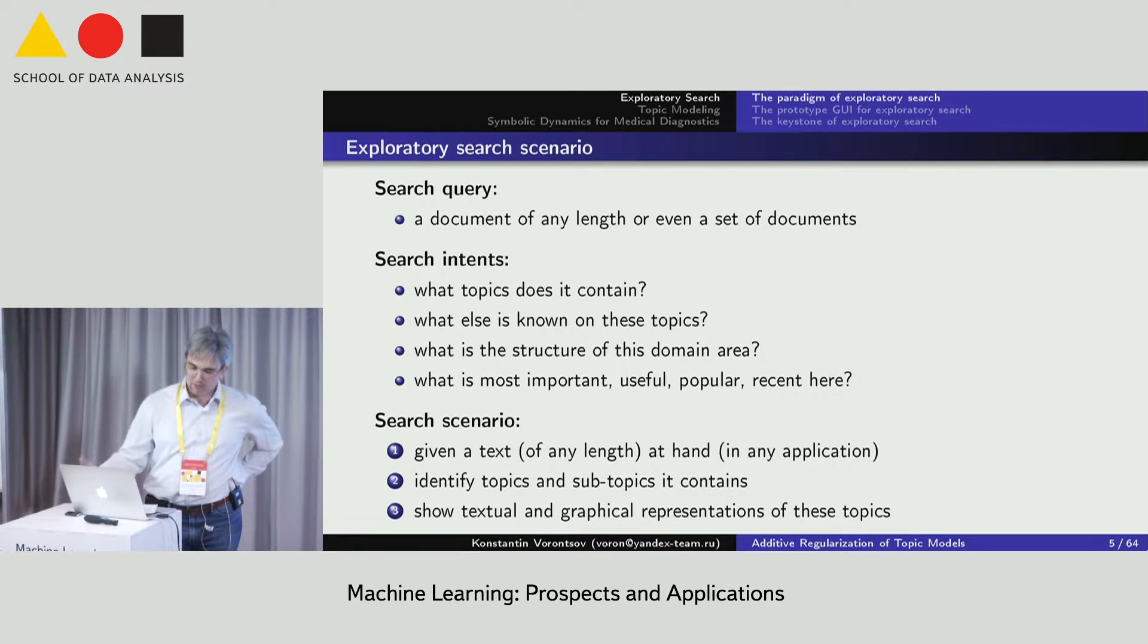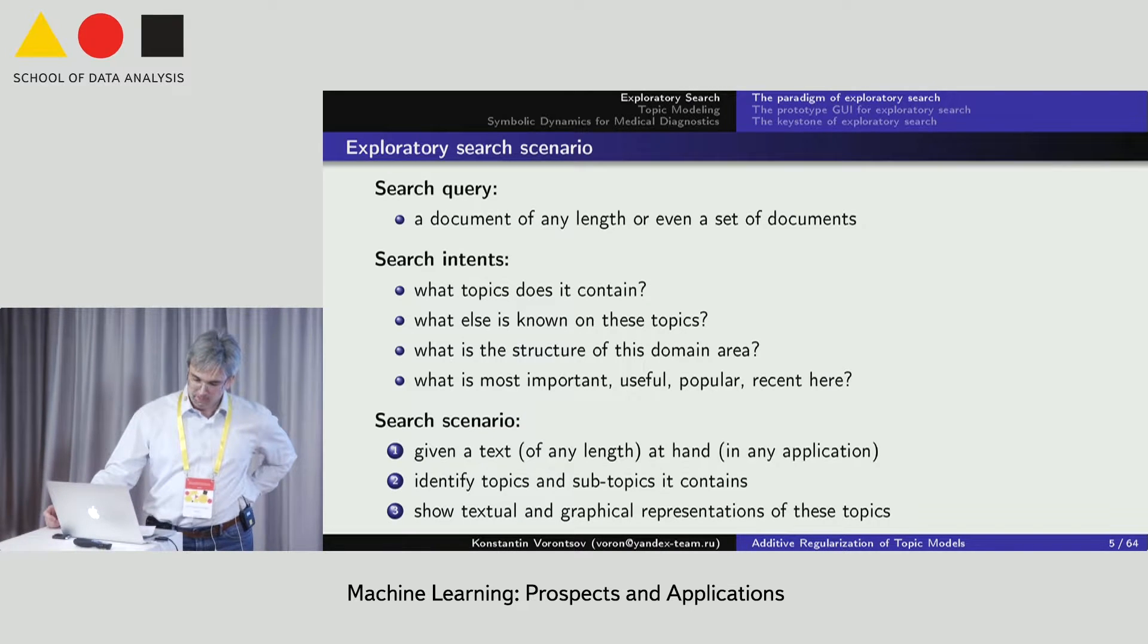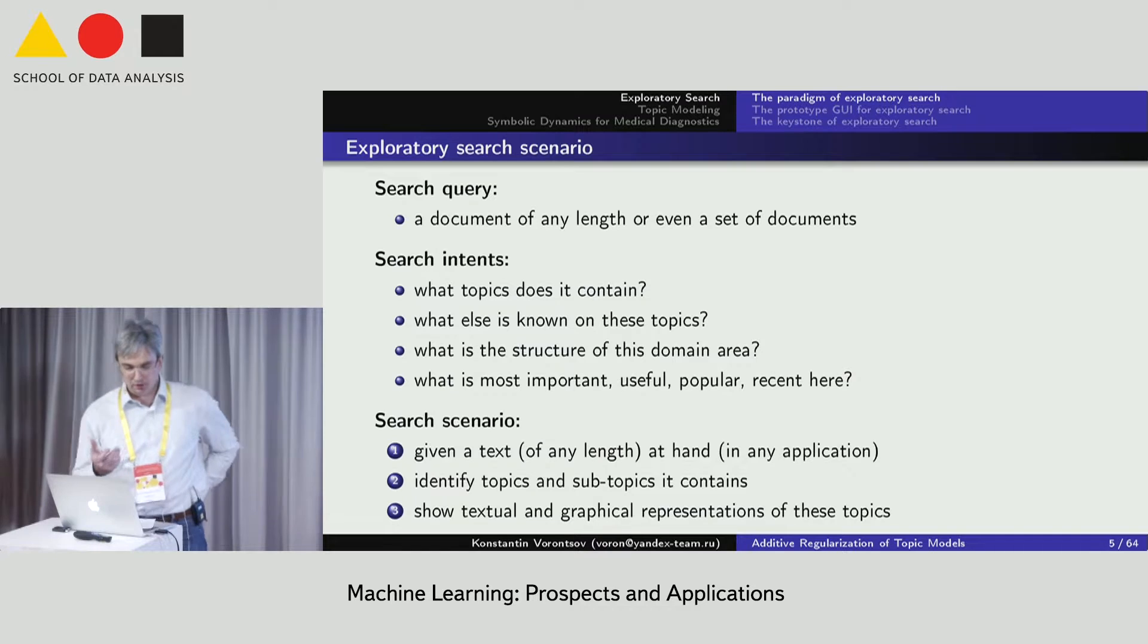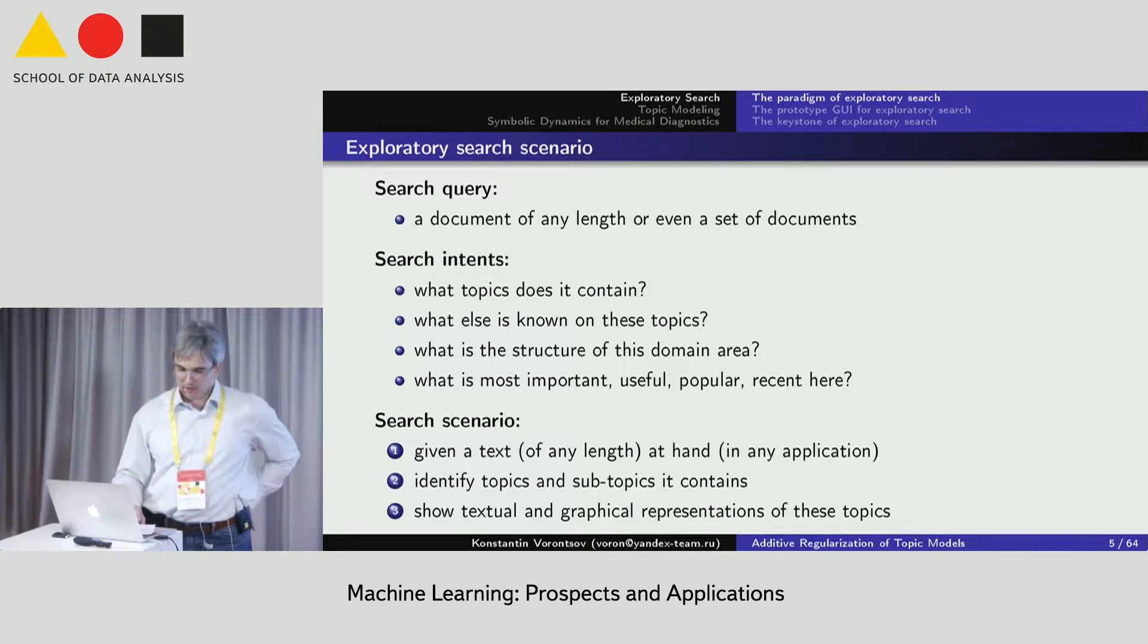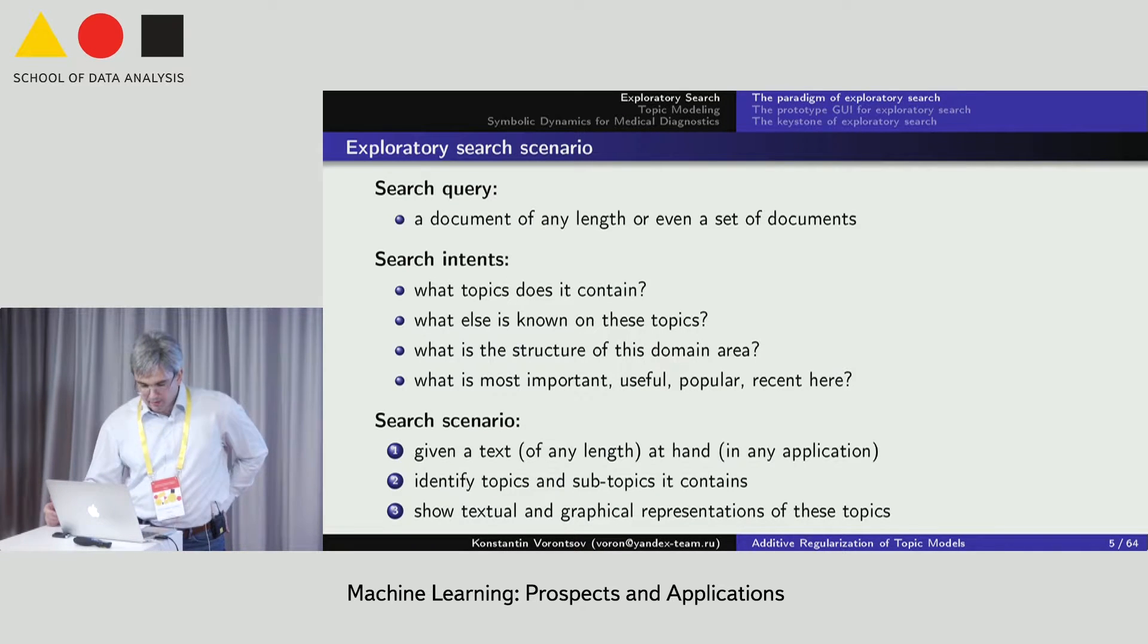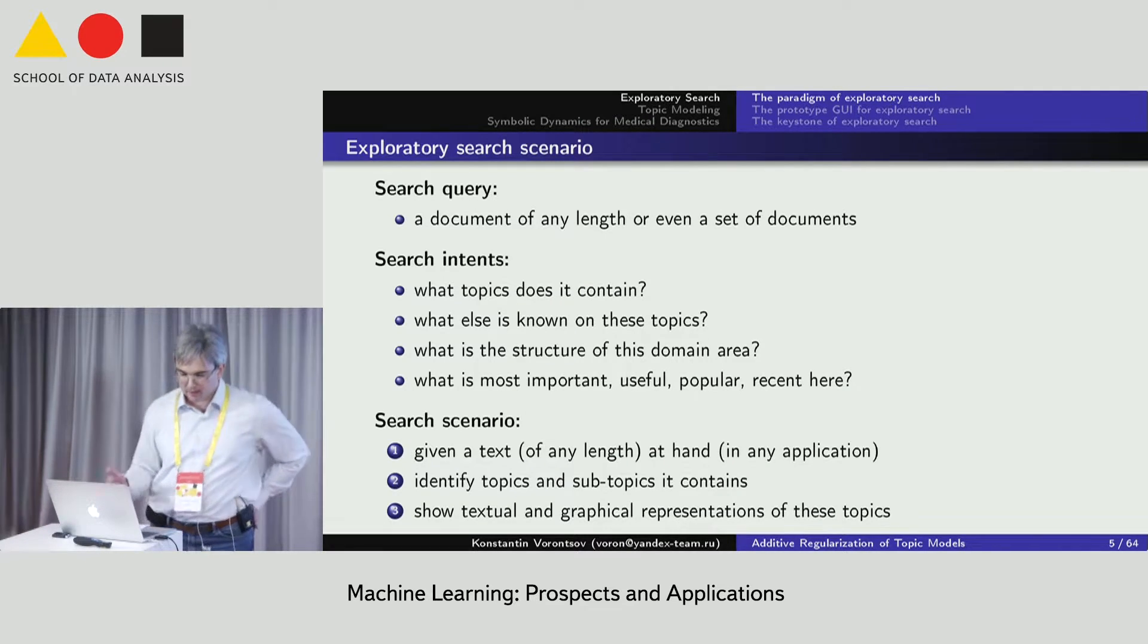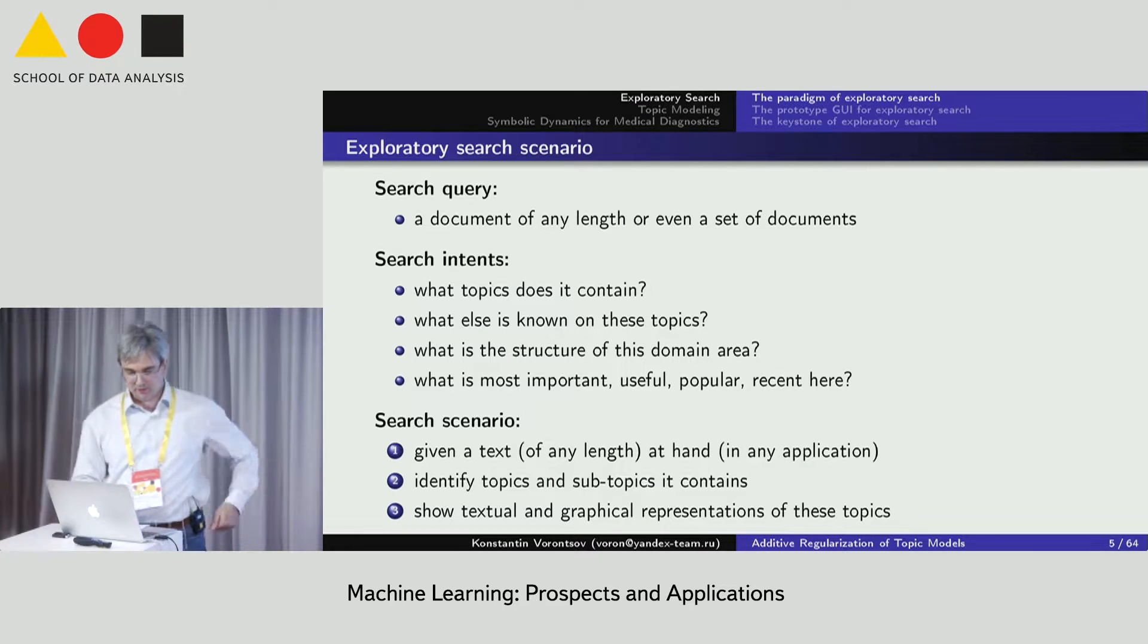This is a rough draft of the concept. The search query should be a document of any length or even a set of documents, a collection that a person collected for him or for his colleagues. The user would know what topics it contains, what else is known on these topics, what is the complex structure of corresponding knowledge domain, which documents are more appropriate for experts and which ones are recommended for the first reading.